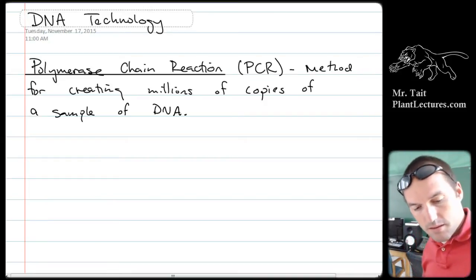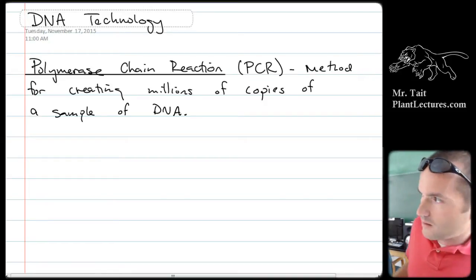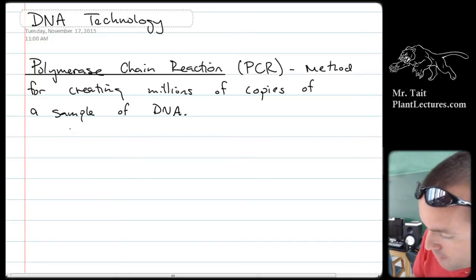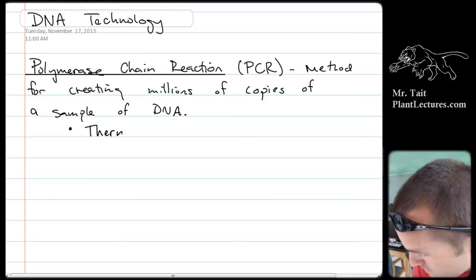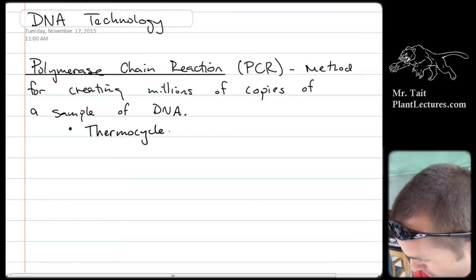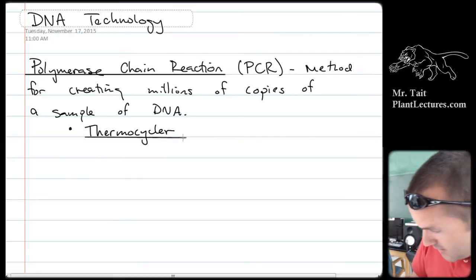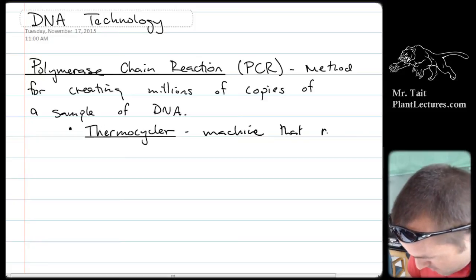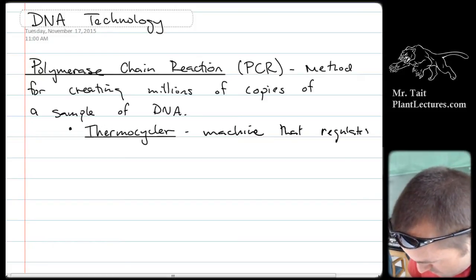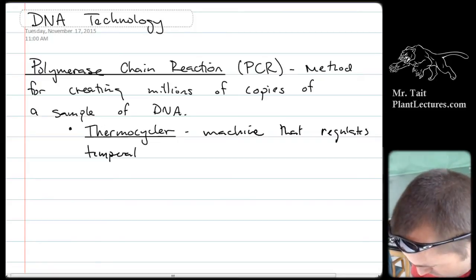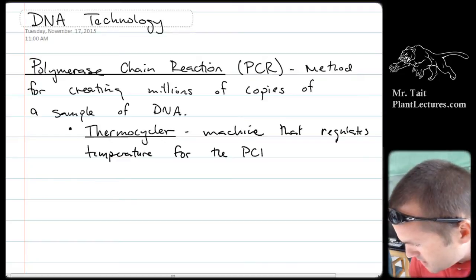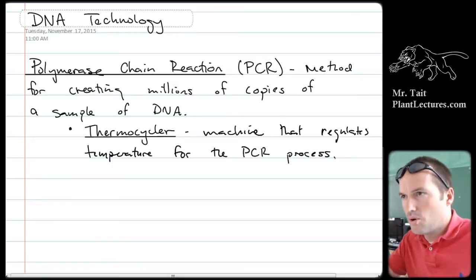Just to clarify — PCR is copying just the DNA, not the entire cells. The machine used for this is called a thermocycler, and that is the machine that regulates temperature for the PCR process. You put your sample of DNA into this machine.